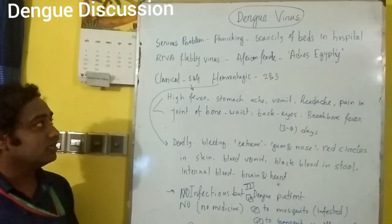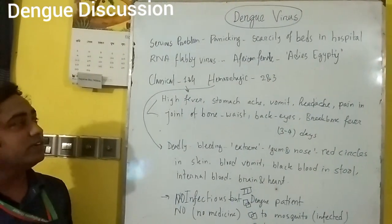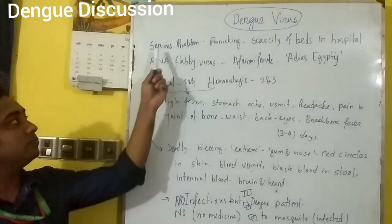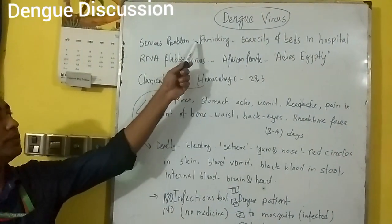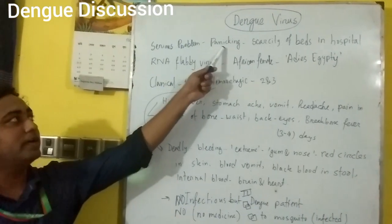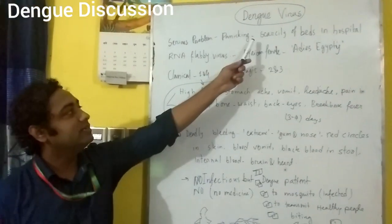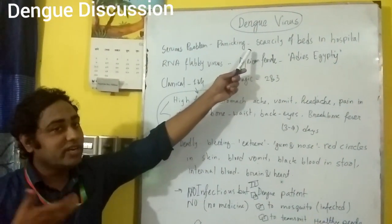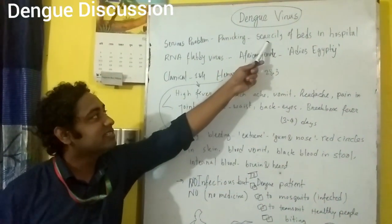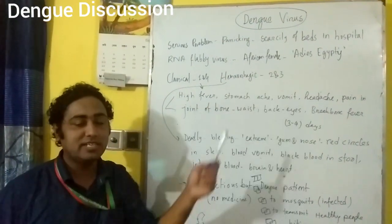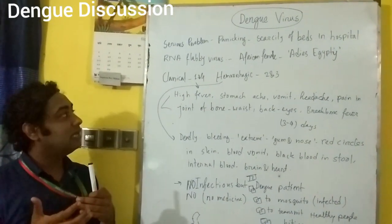Dengue virus is a very serious problem in our country during the rainy season. Most of the people are panicking — look at the spelling: panicking — because people are afraid of it. And nowadays, due to the increase in the number of patients in our country, scarcity of beds in the hospital is a great problem.